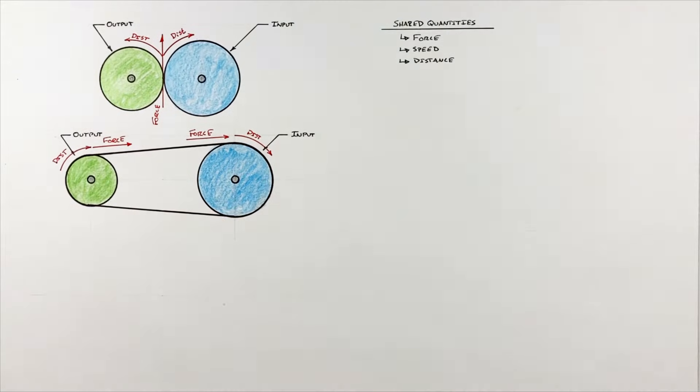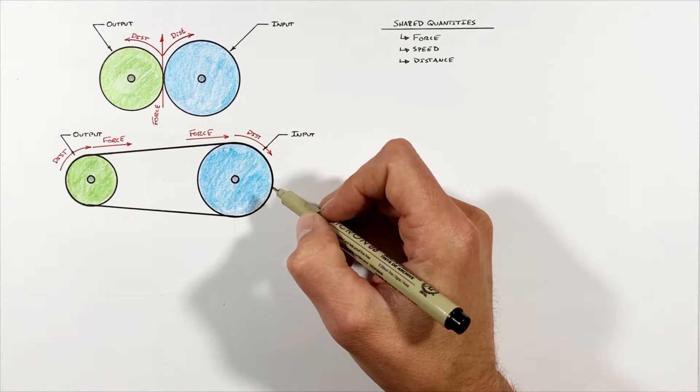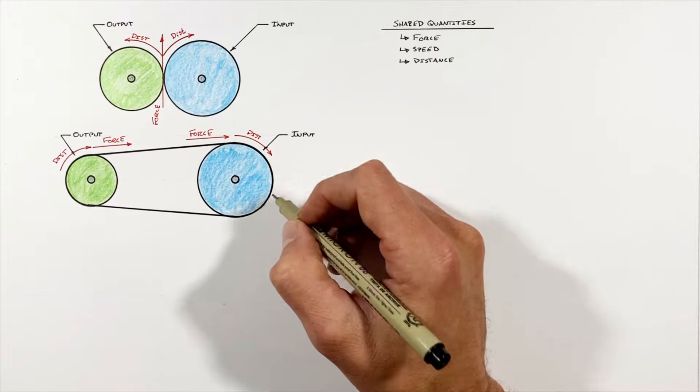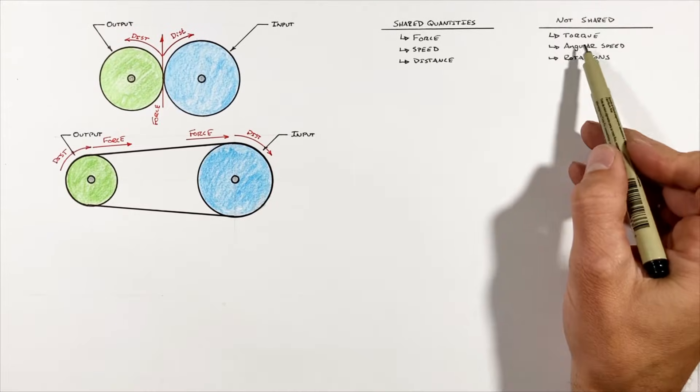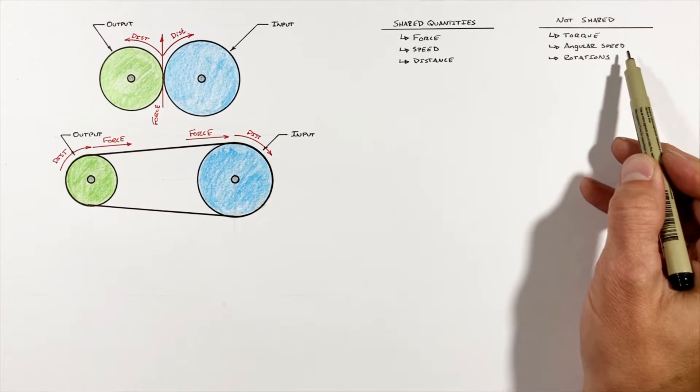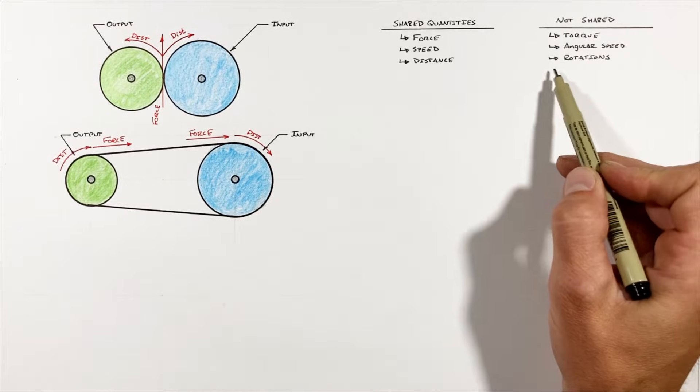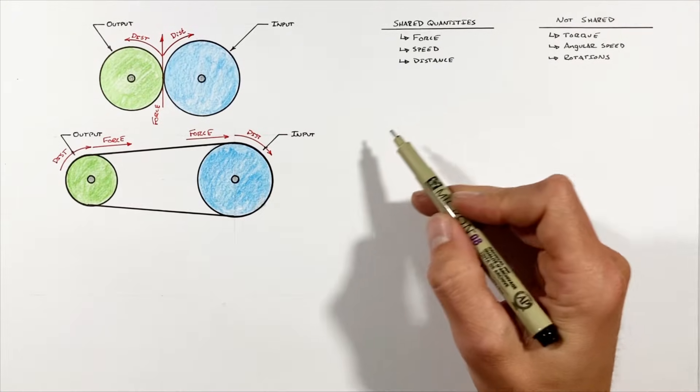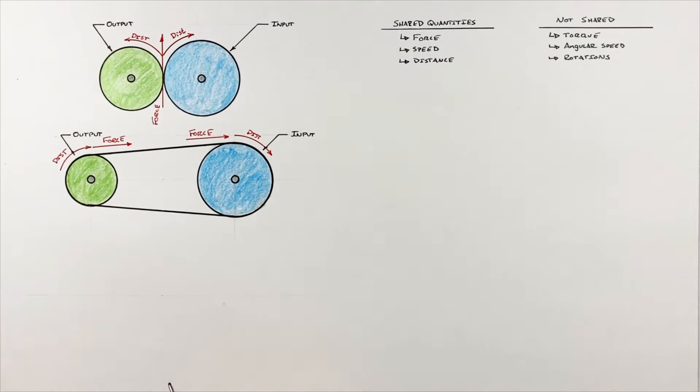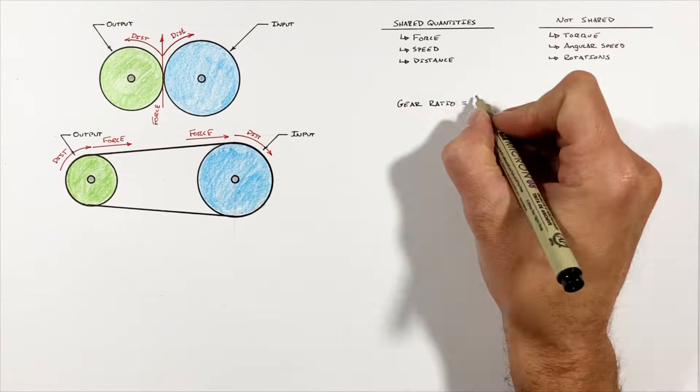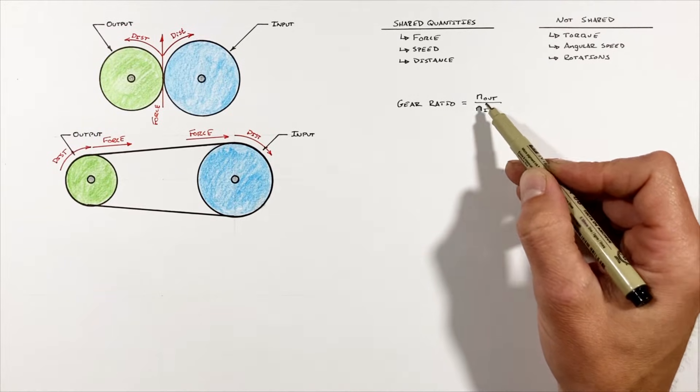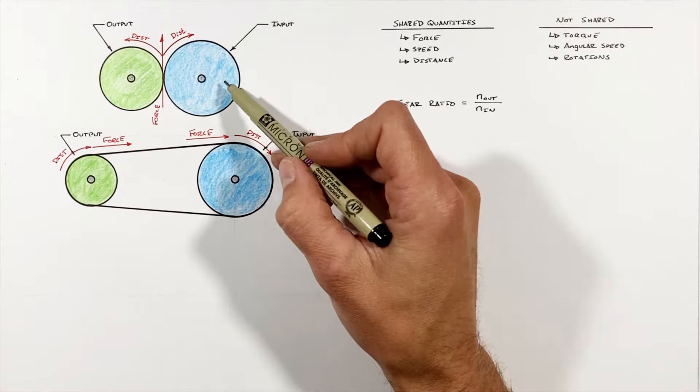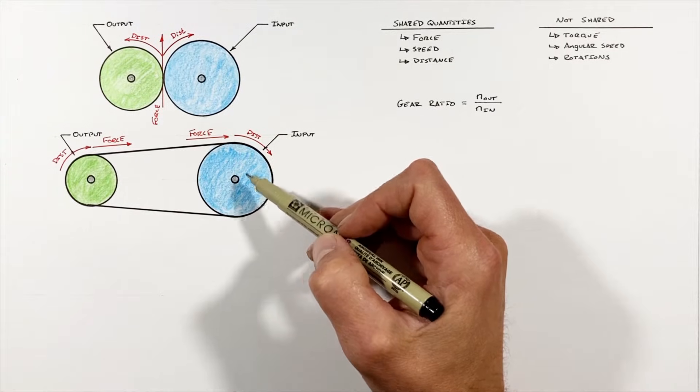In the case of a sprocket and chain, it's the role of the chain to transfer the force, speed, and distance which the edge of one sprocket travels to the other sprocket. Now what varies in a gear or sprocket set is what we call rotational quantities. Those quantities being torque, angular speed or angular velocity if you want to call it that, and rotations. And that's where gear ratios come in. A gear ratio is given by the equation n_out over n_in, where n is the number of either gear teeth or sprocket teeth on either of the input or output gear or sprocket.